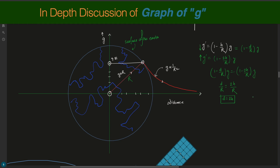So at a depth equal to twice the height, the value of gravitational acceleration will be equal. This indicates that the gravitational acceleration decreases faster when moving inside the Earth compared to moving away from it. From the diagram, we can see g decreases sharply inside Earth but decreases more gradually outside.